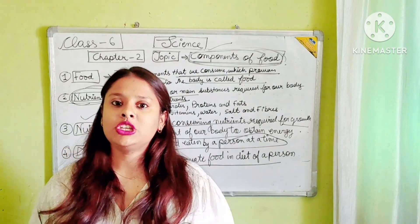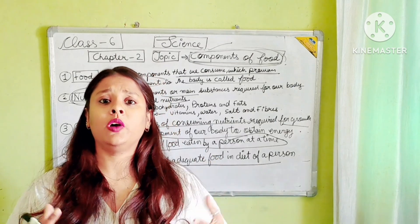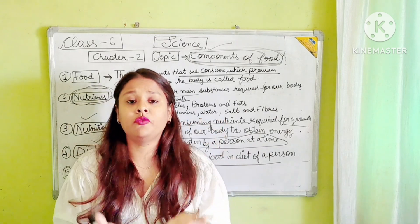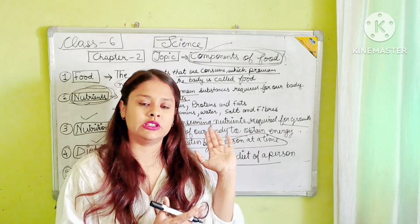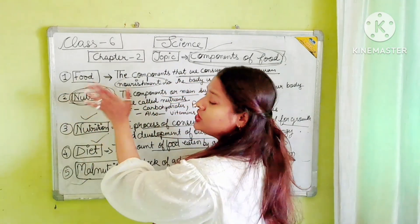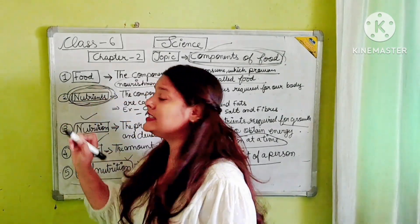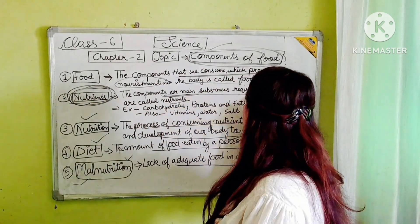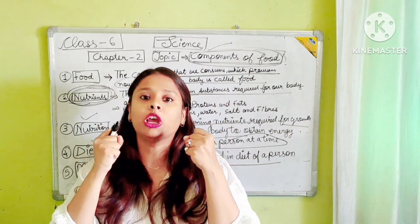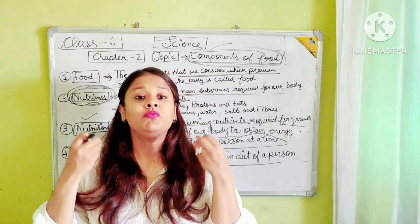Now in today's chapter, named as components of food, we are going to discuss what food comprises of — what components are in it. Before starting, let's look at a few definitions. First is nutrients. What are nutrients? The components or main substances required for our body — substances that are required to keep our body healthy — are called nutrients.